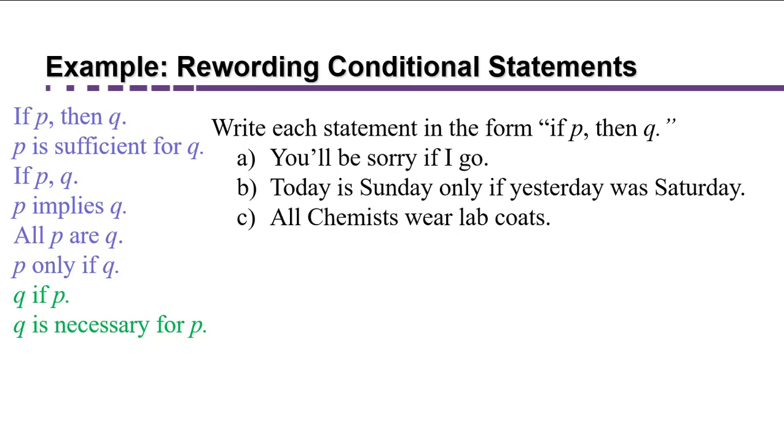I've organized the conditional forms into two categories. Those where the P, the antecedent, comes before Q, the consequent, and those are in purple. And then there are the ones in green where Q comes before P. The consequent is actually stated before the antecedent.